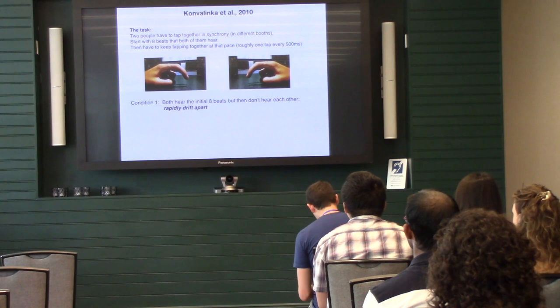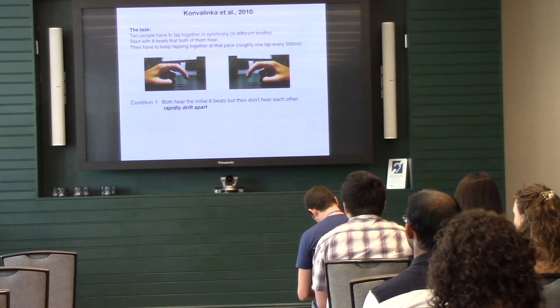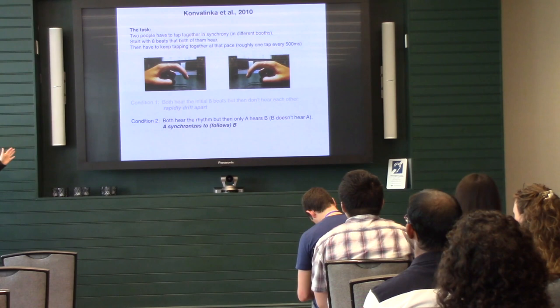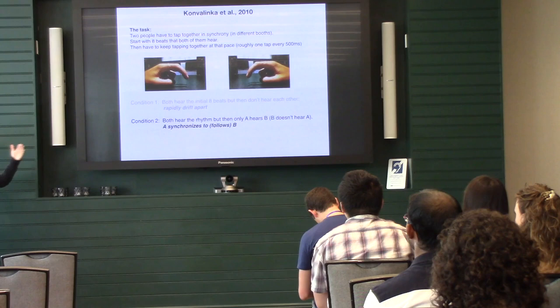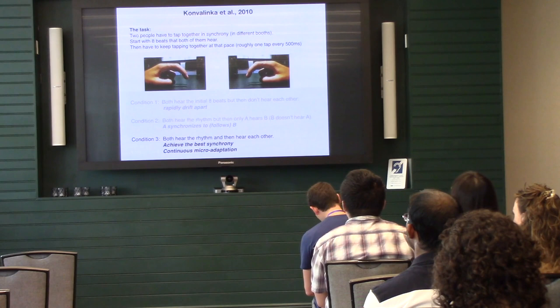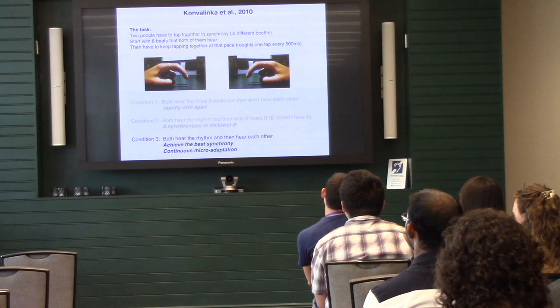Here's another study that looks at this just with very physical finger tapping. This study by Konvalinka came out several years ago now, where two people are tapping. They're told to tap together. They're in separate booths. They start off where they're listening in their headphones to eight tones, eight beats, and they have to tap to those beats and then they have to keep going. In one condition they both hear the initial eight beats but then they don't hear each other, so they just hear themselves tap and very quickly they drift apart. In condition two, both hear the rhythm but then only one person hears the other person. And what you get is a leader follower dynamic. The best condition is when they both hear the rhythm and then they can hear each other. And what you get is this micro adaptation, trial by trial they keep on track and they get the best synchrony.